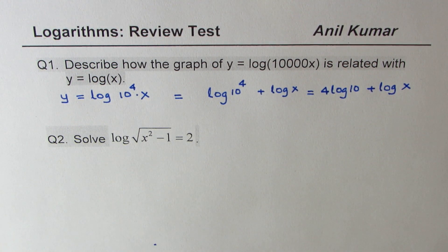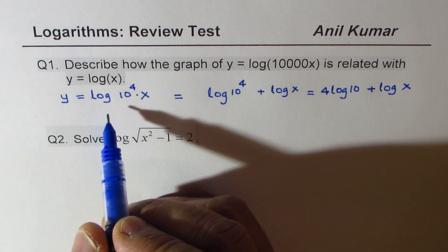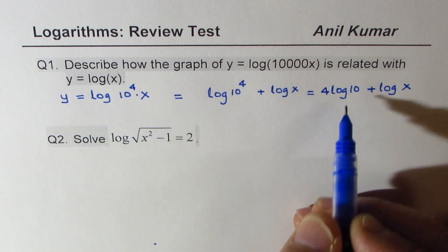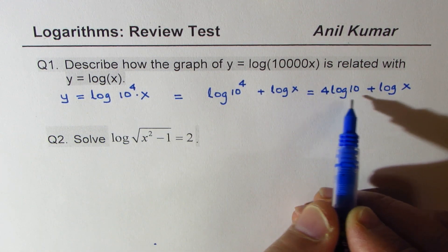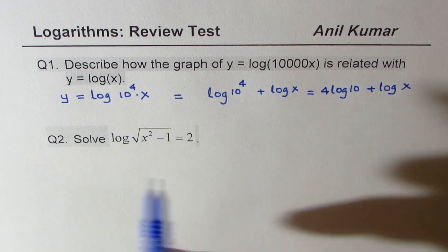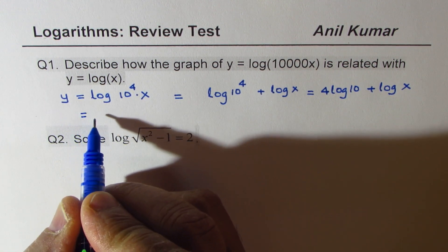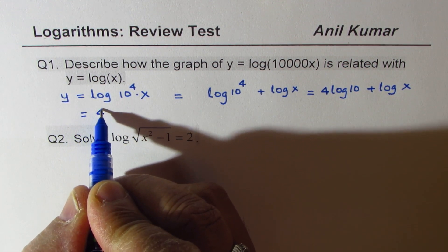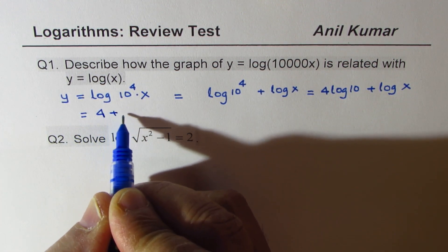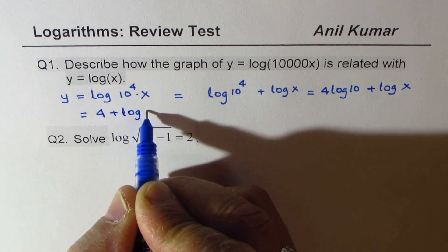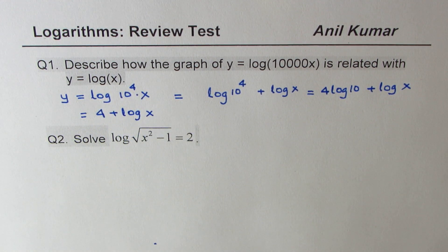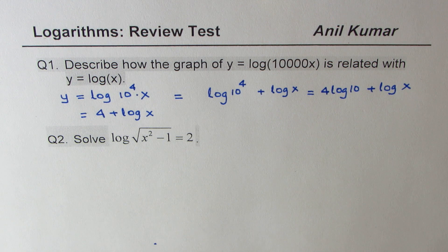What is 4 log of 10? Well, this logarithm is to the base 10, and therefore 4 log of 10 should be equal to just 4. So we get 4 plus log of x. Now once you get to this form, you can actually describe the transformation very easily.